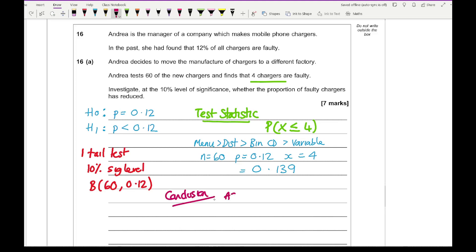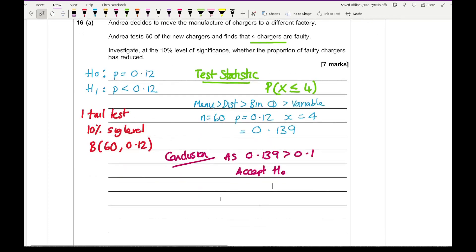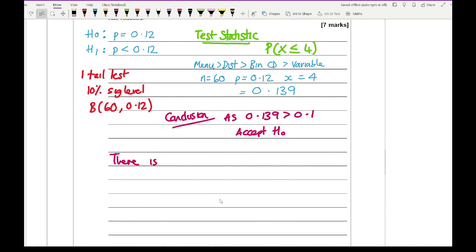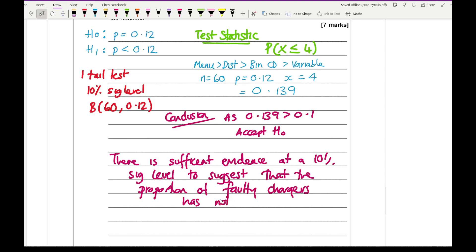Looking at this from the conclusion perspective, the conclusion is that as 0.139 is greater than 0.1, we accept the H0, and what does that mean? Well it means that there is sufficient evidence at a 10% significance level to suggest that the proportion of faulty chargers has not changed. Something along those lines would be absolutely fine.